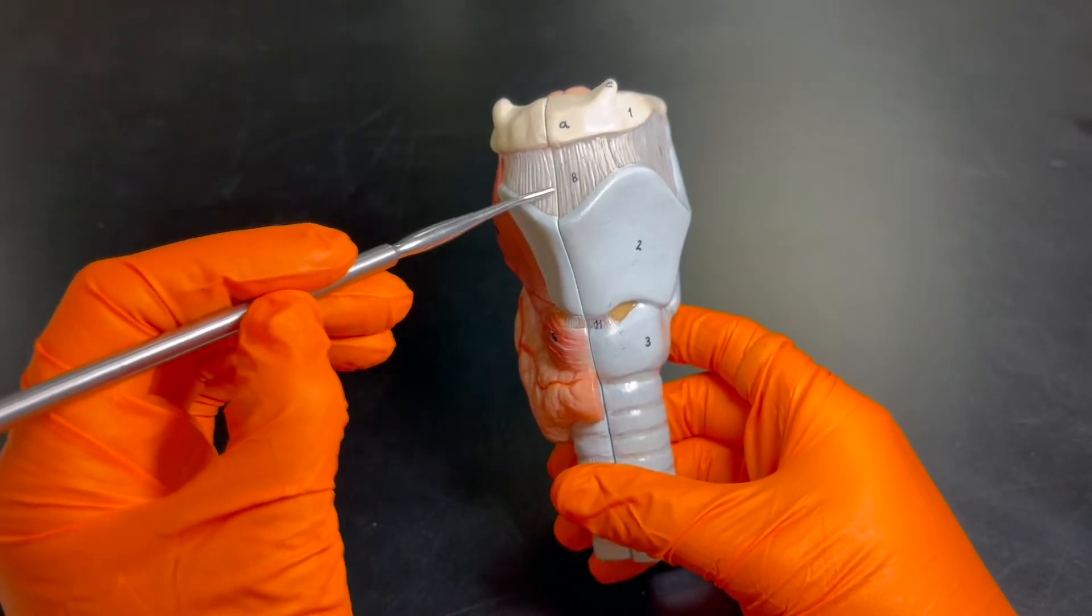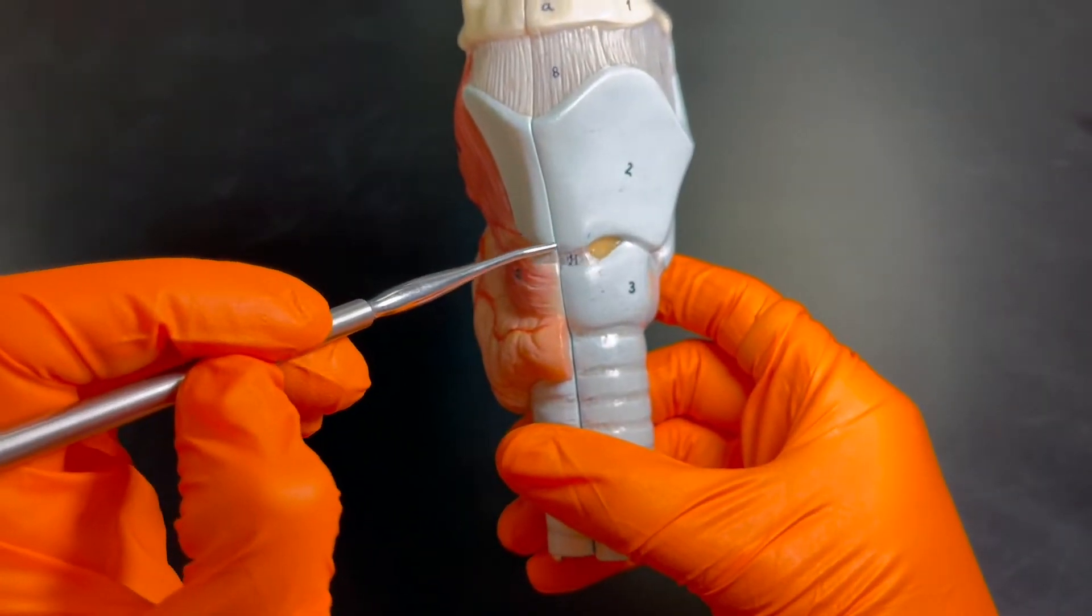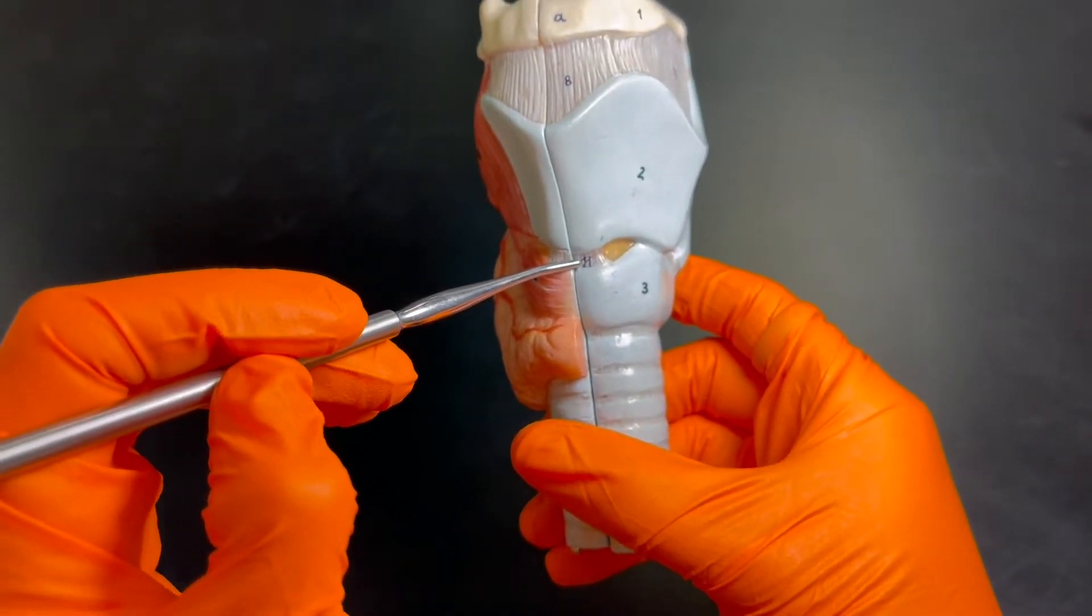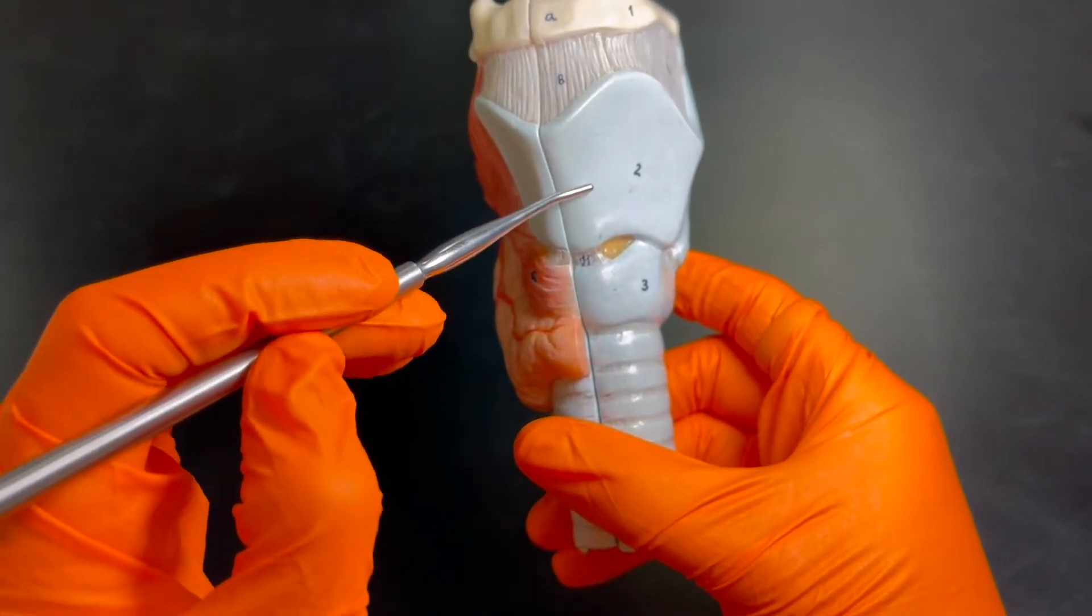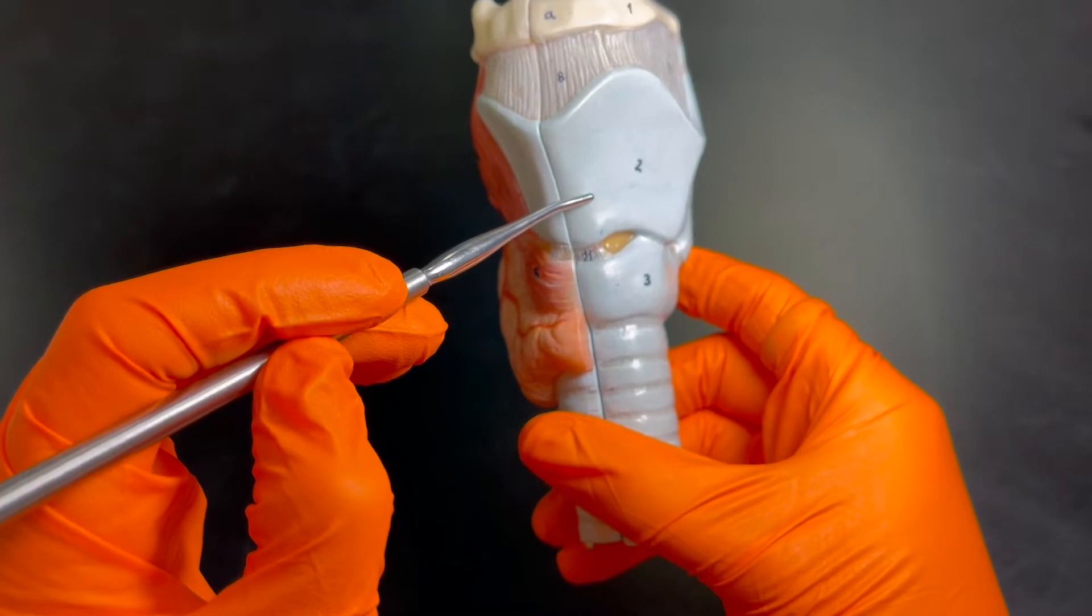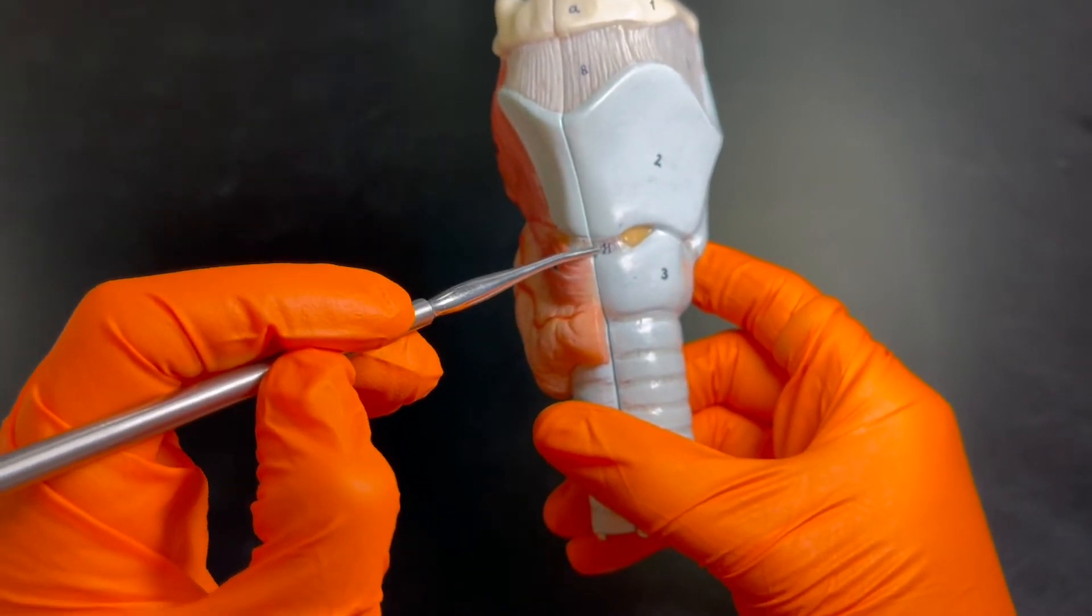Then we have another one that's this one right here. Let me kind of bring it in a little bit closer. This smaller one is called the cricothyroid membrane, or cricothyroid ligament is another way you might see that.